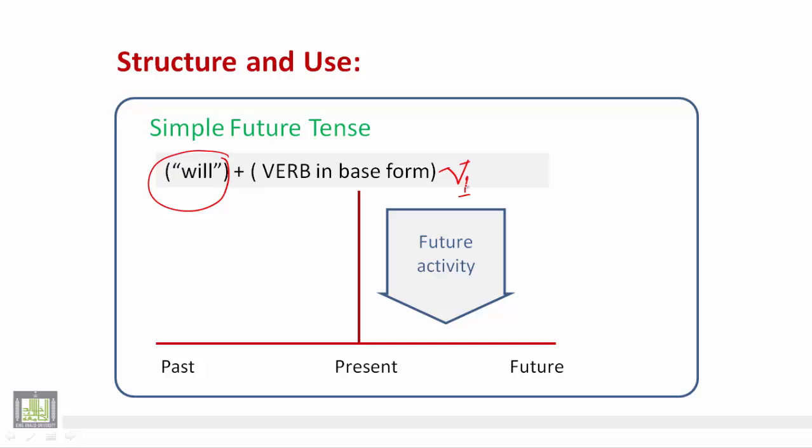We use this tense to talk about a decision that we've just made now about the future. So if we are here now, then we are talking about a decision that we want to do in the future in this area.